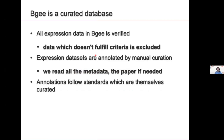BG is a curated database. All expression data is verified — we only take wild-type healthy expression, and anything not fulfilling those criteria is excluded. Every expression dataset is annotated by manual curation: we associate the expression data to the anatomical term, the age, the species. Our curators read all metadata submitted to GEO and ArrayExpress, go to the paper and supplementary material, and if unclear, contact the authors. We follow standards for which annotation terms we use.